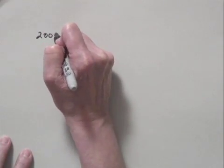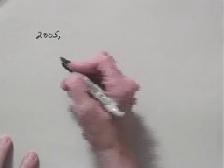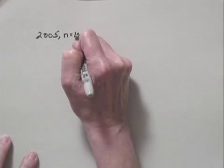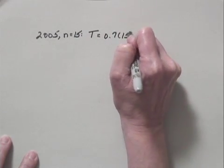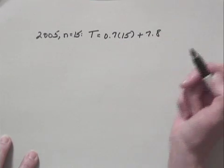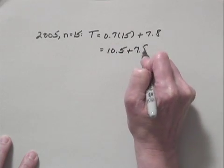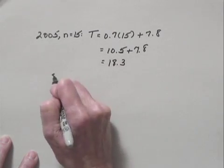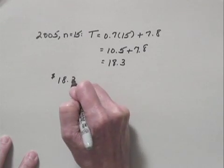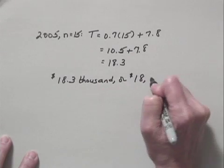Now let's look at 2005. 2005 is 15 years after 1990, since 2005 minus 1990 is 15, so N equals 15. The tuition T is given by 0.7 times 15 plus 7.8. 0.7 times 15 is 10.5, and 10.5 plus 7.8 equals 18.3. So the tuition in 2005 was $18,300.